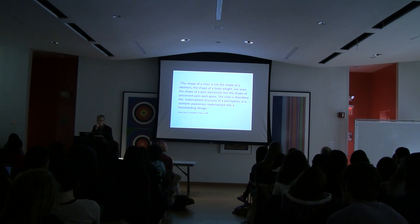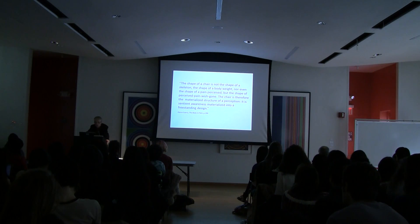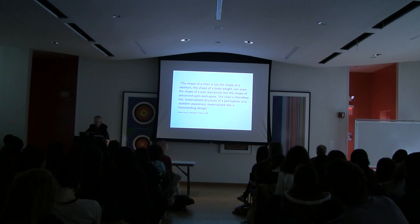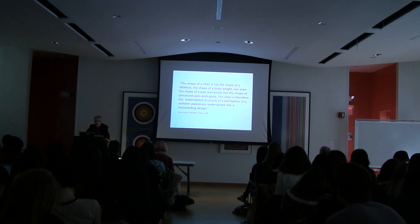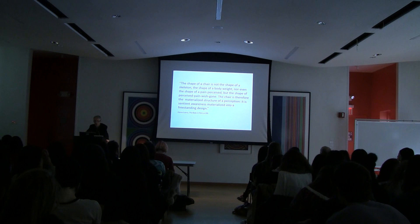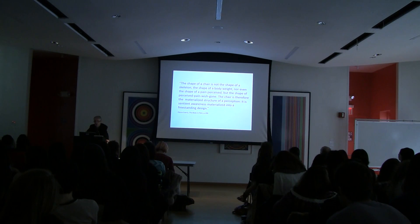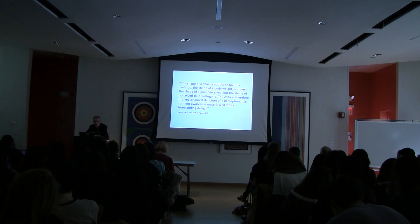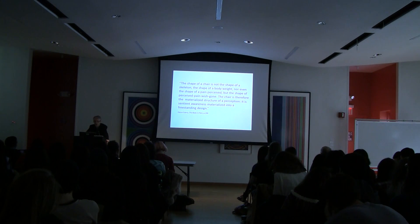The film enacts this tyranny which is actually grounded on simple material deprivation. What Scarry is making here is a relation between justice, making, and persons — whose corollary is injustice, unmaking, and un-persons. Now Scarry's other point is that when we are making, particularly when we are designing, we are making from a basic human observation about the conditions of our embodied nature. She has this lovely proposition: the shape of the chair is not the shape of the skeleton or the body, but the shape of perceived pain which is gone.